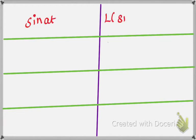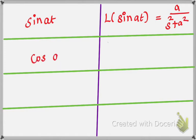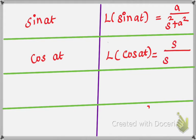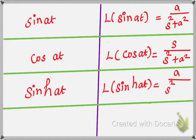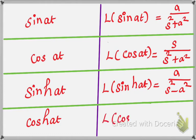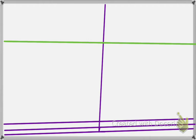L of sin a t is equal to a by s square plus a square. Next, f of t equal to cos a t. So L of cos a t is equal to s by s square plus a square. Also, L of t is equal to 1 by s square.